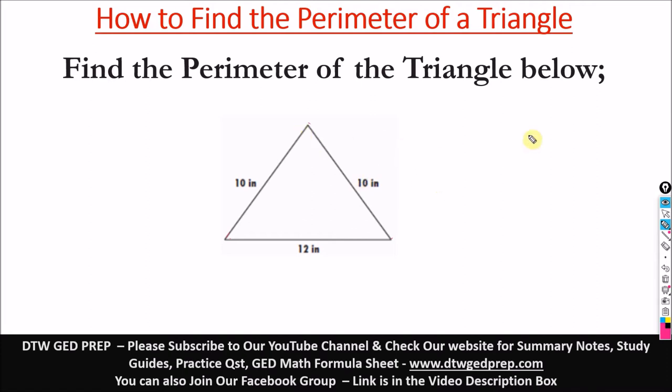So to find the perimeter of this triangle below, what you do is just add up all the sides. So we have the perimeter of the triangle, let me just draw the triangle, is equal to